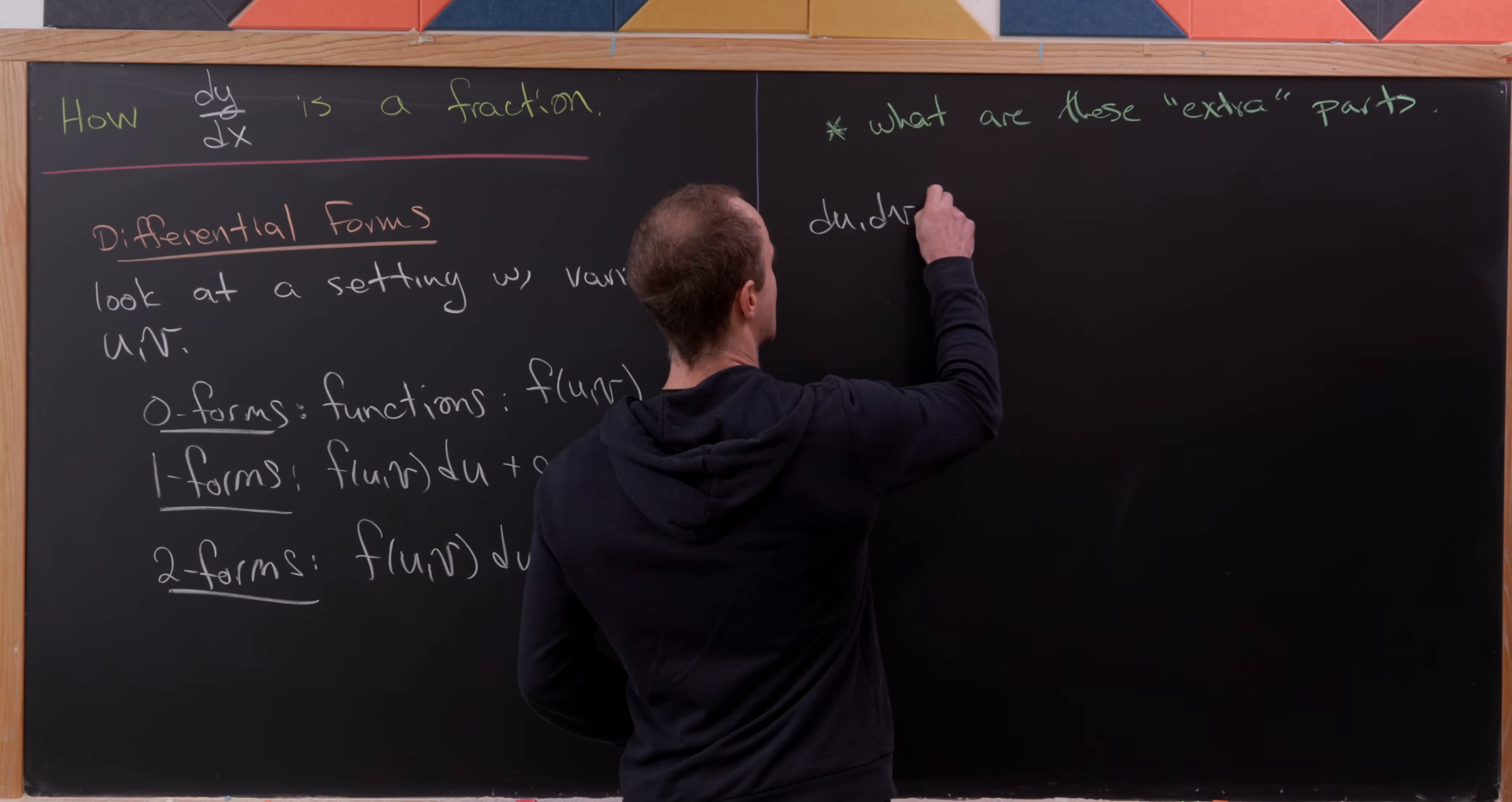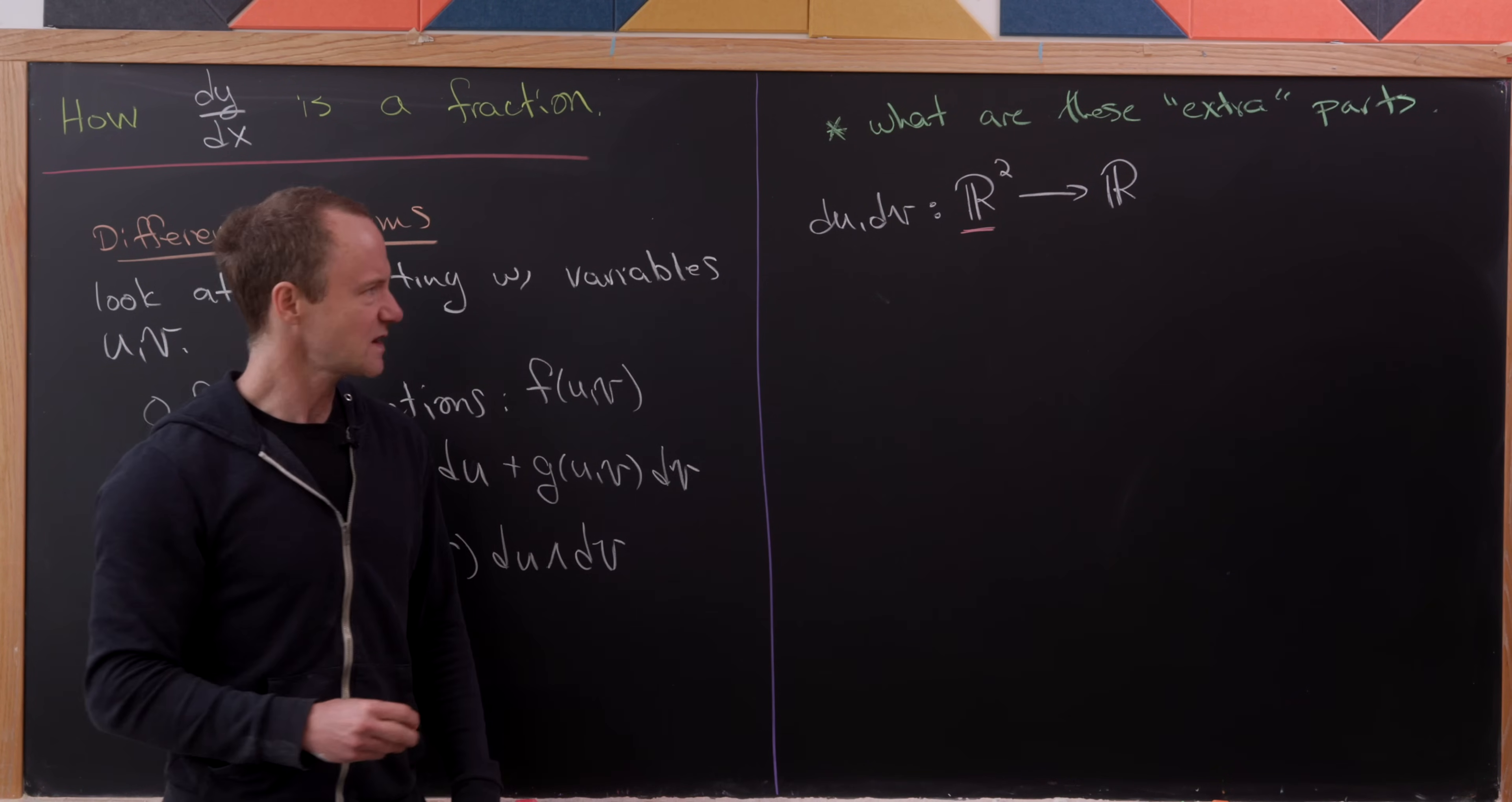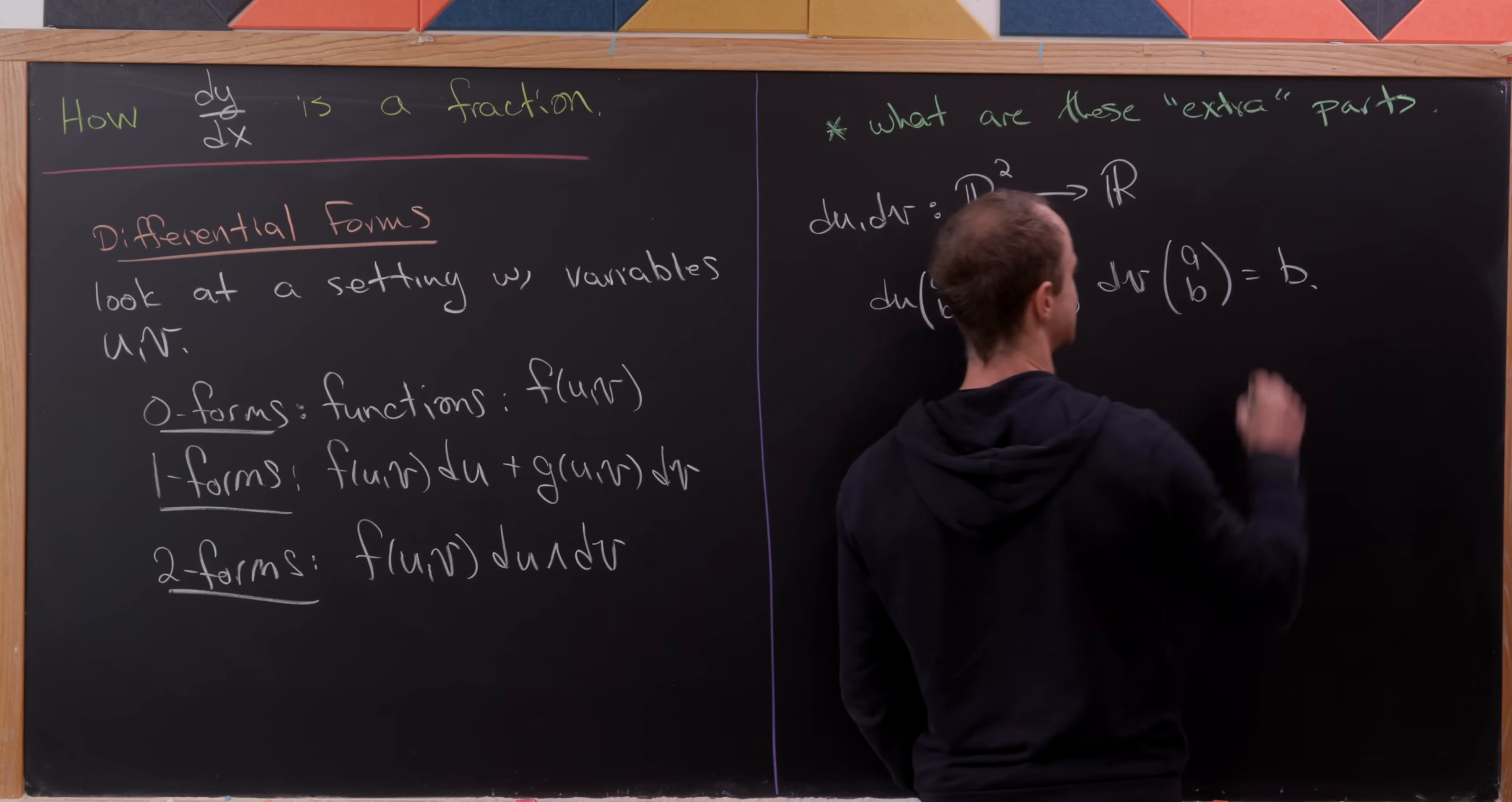So du and dv can be thought of as functions that take in a two vector and give you a number. Now this is not quite right, not perfectly right. They don't exactly take in a two vector. They take in a two vector at a point. You're actually in something called the tangent space. But I'll just maybe put a star here to point out that we're not exactly right. And what do they do to that two vector? We can explain it pretty easily. So du acts on the vector a, b, and just gives us that first component a. And then dv acts on this vector a, b, and it just gives us this second component b. So for the one forms, those are just projections.